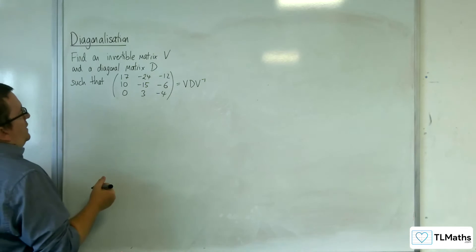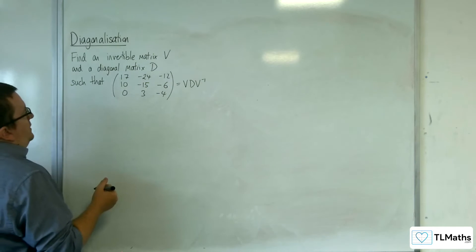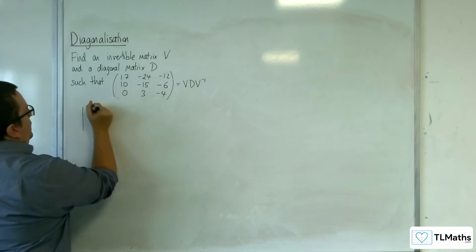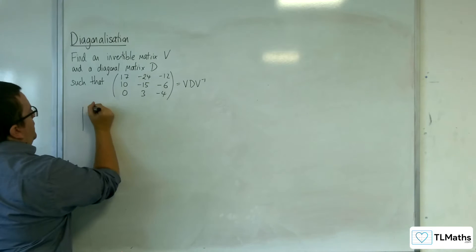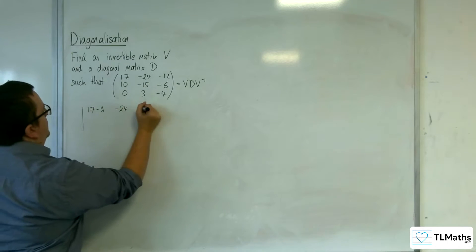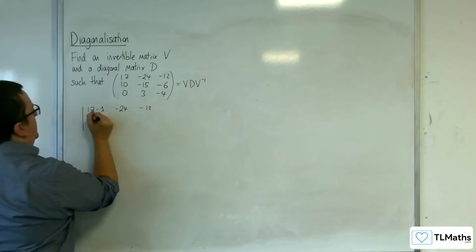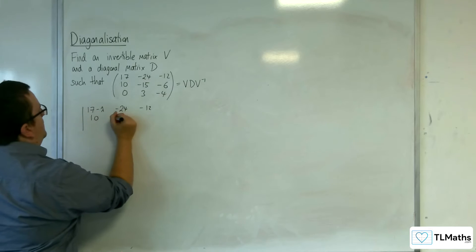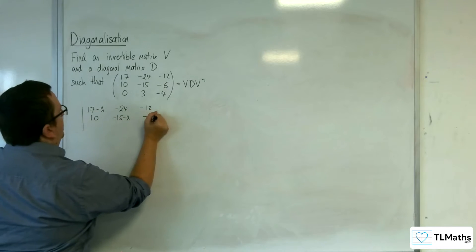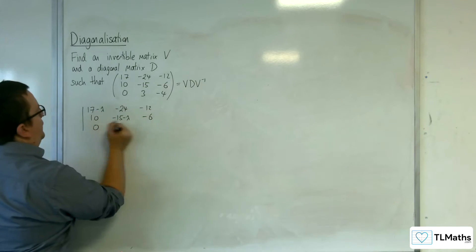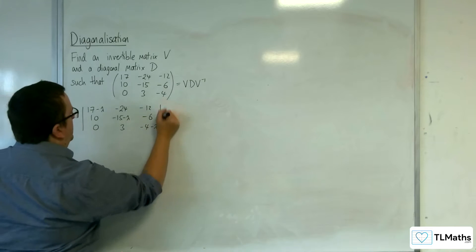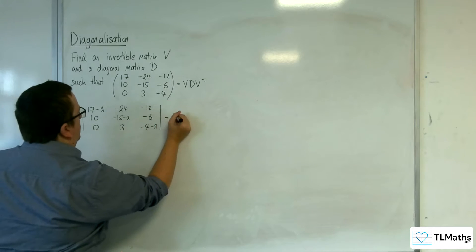First of all, we need to find the eigenvalues. That's going to be the determinant of the matrix with entries 17 minus lambda, minus 24, minus 12, 10, minus 15 minus lambda, minus 6, 0, 3, minus 4 minus lambda, equals 0.